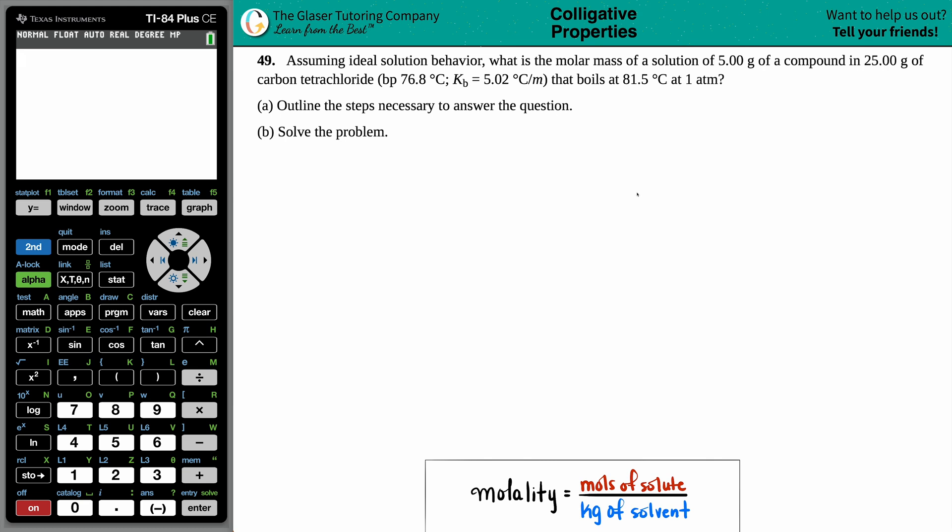Number 49. Assuming ideal solution behavior, what is the molar mass of a solution of 5.00 grams of a compound in 25.00 grams of carbon tetrachloride? They tell us the normal boiling point for carbon tetrachloride is 76.8°C with a Kb value of 5.02°C per molality, and the solution boils at 81.5°C at 1 atm. We need to outline the steps and solve the problem.